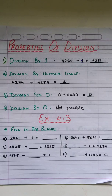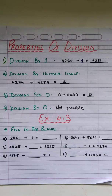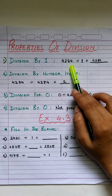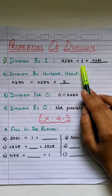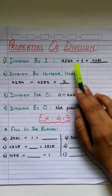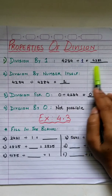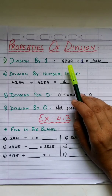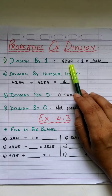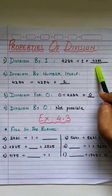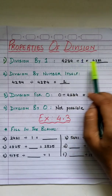Now let's learn about some properties of division. First, division by 1: when any given number is divided by 1, we get the same number as the quotient. For example, 4,284 divided by 1 gives 4,284 — the same number.